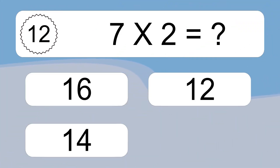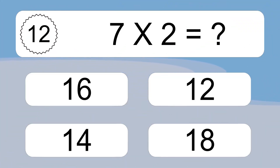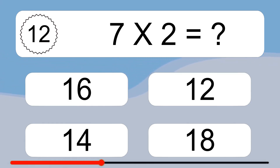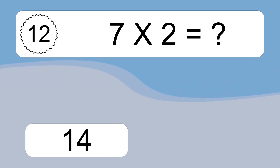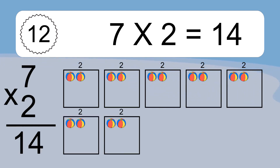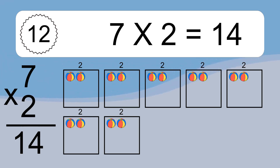Seven times two equals what? Seven times two equals fourteen. We have seven boxes, and each box has two colorful balls inside. If you count all the balls in all the boxes together, you will have seven times two balls.